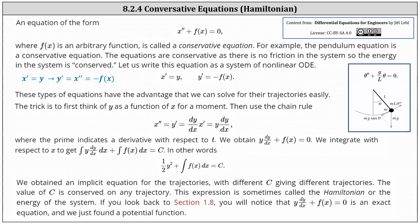Welcome to a lesson on conservative equations and the Hamiltonian. A differential equation of the form x double prime plus f of x equals zero, where f of x is an arbitrary function, is called a conservative equation. For example, the pendulum equation theta double prime plus g divided by l times theta equals zero is a conservative equation. The equations are conservative as there is no friction in the system, so the energy in the system is conserved.